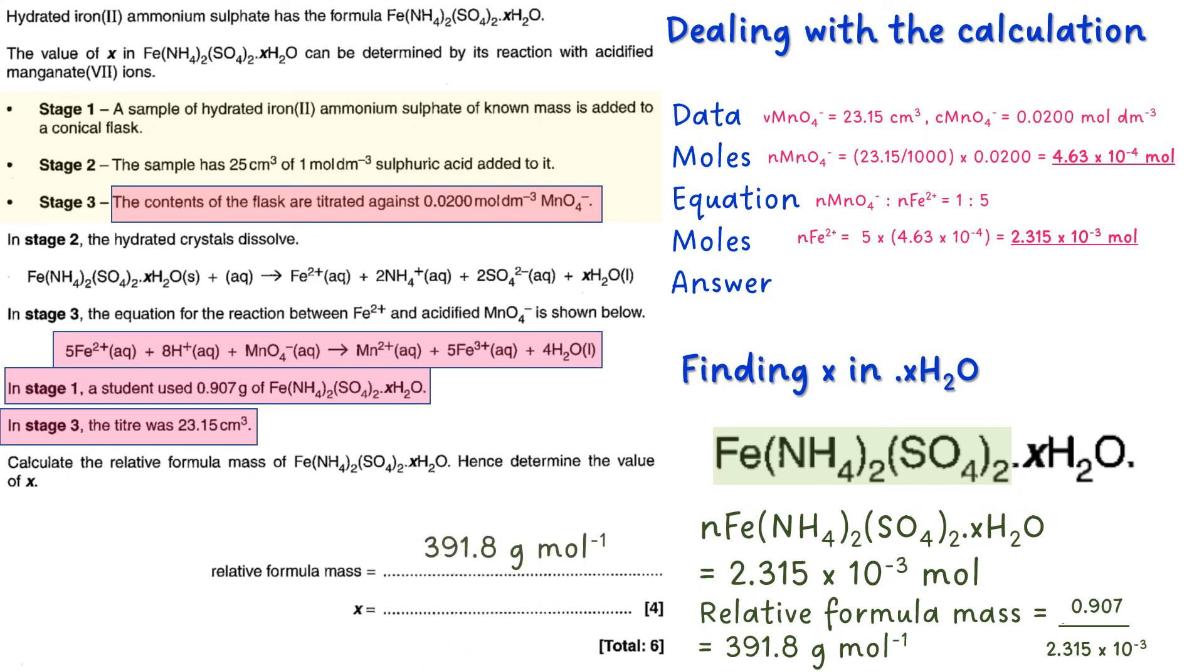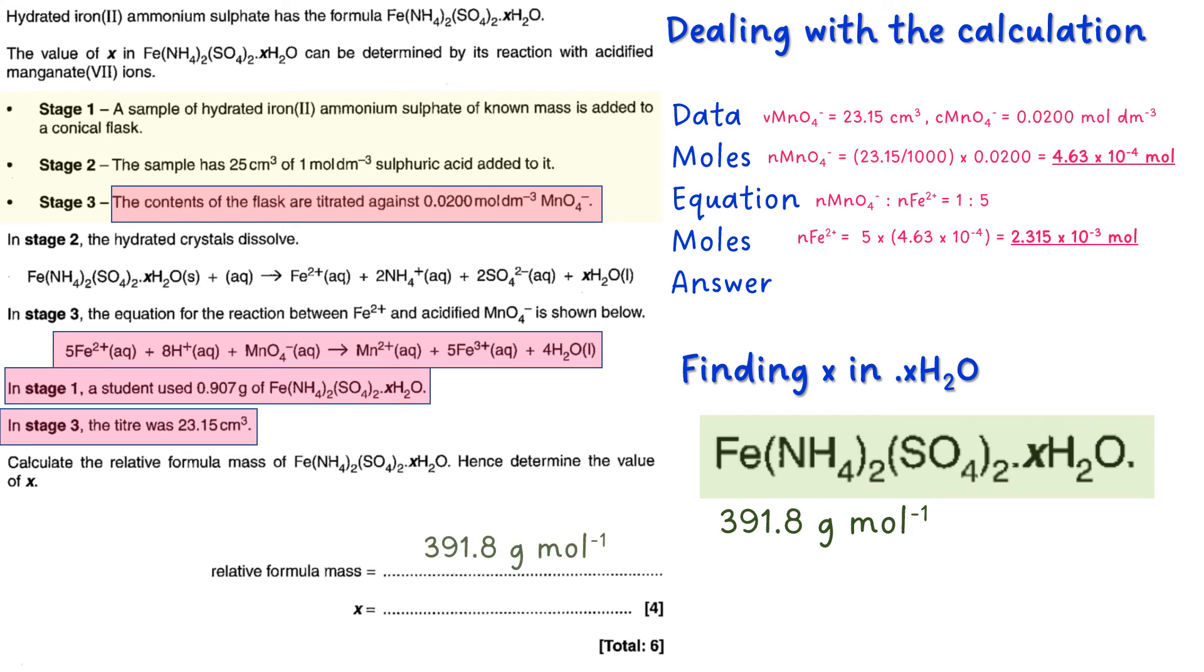So what you do is you minus 284, which is what we worked out a little while ago, away from that 391.8, and that gives you 107.8 grams per mole. So that's the molar mass for your xH2O. Remember we said that H2O has a molar mass on its own of 18.